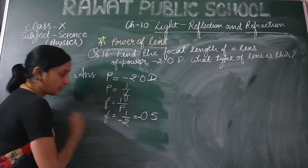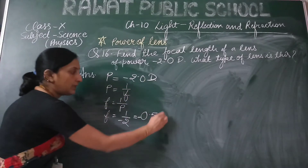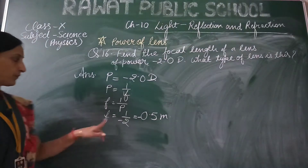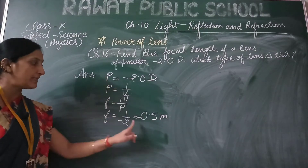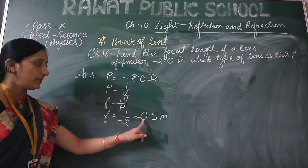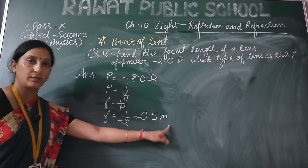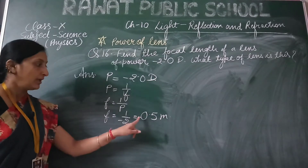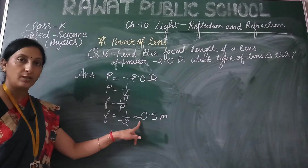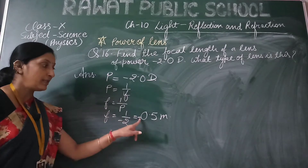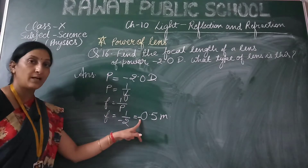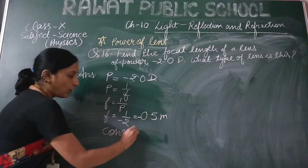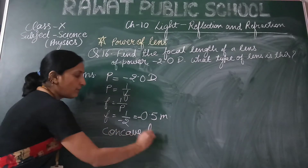Centimeter or meter? If it is given in diopter, it is obvious it is in meters. So the focal length of this lens is minus 0.5 meters. The minus sign shows that if focal length is negative, it is a concave lens.